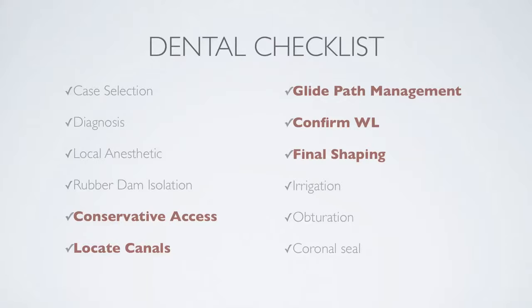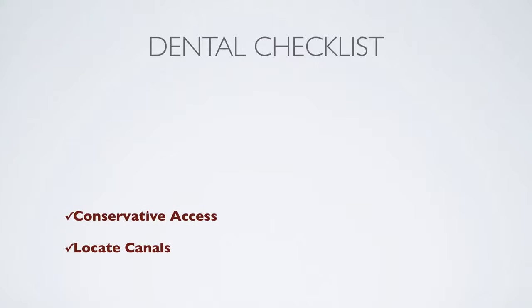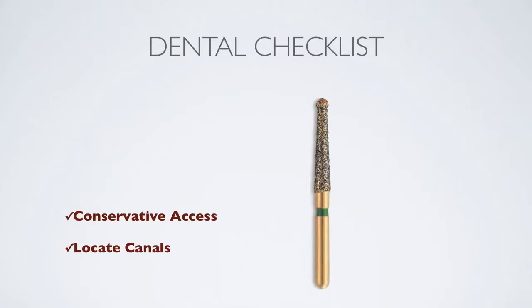Let's take on the first two highlighted items: conservative access and locating the canal. Now that we have the rubber dam in place it's time to perform a conservative access preparation. I always start with a lexicon endo access burr, which allows for ease of penetration into the pulp chamber. I enlarge the access with the endoz burr shown here — I like this burr since it's non-end cutting and has a slight taper, which will result in ideal cavity prep when finished.